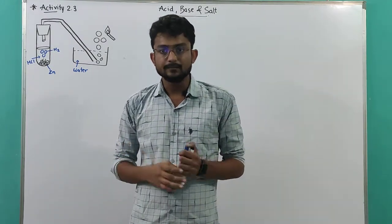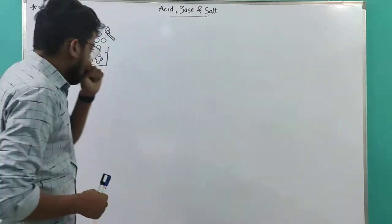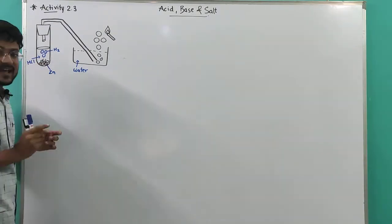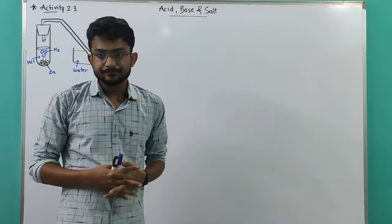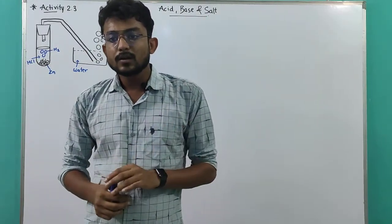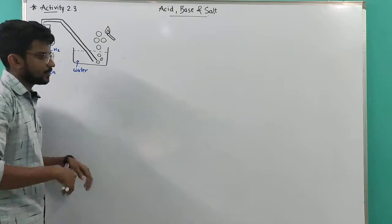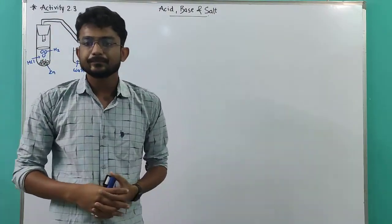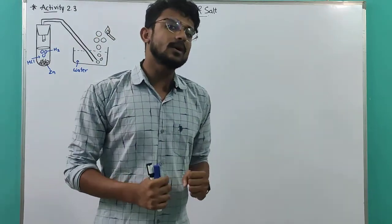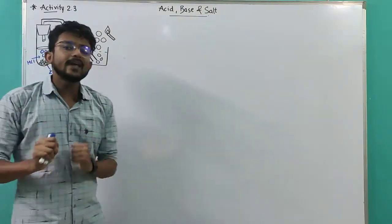Third point: what do you observe on the surface of the zinc granules? Bubbles of hydrogen gas will evolve. After that, pass the gas being evolved through the soap solution. You can also use soap solution instead of water. Why do bubbles form in the soap solution? Because the hydrogen gas that forms does not dissolve in it — that's why.